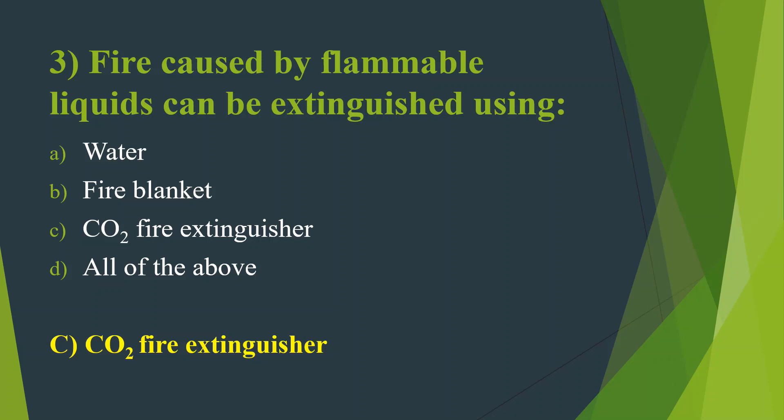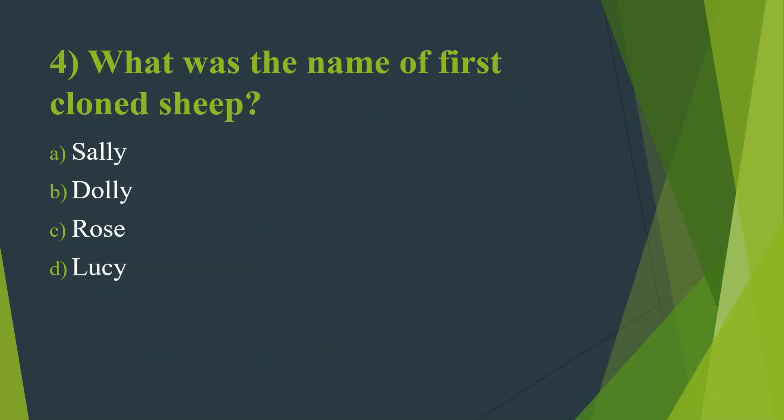Fourth question: What was the name of the first cloned sheep? Option A, Sally. Option B, Dolly. Option C, Rose. Option D, Lucy. Answer is Option B, Dolly.